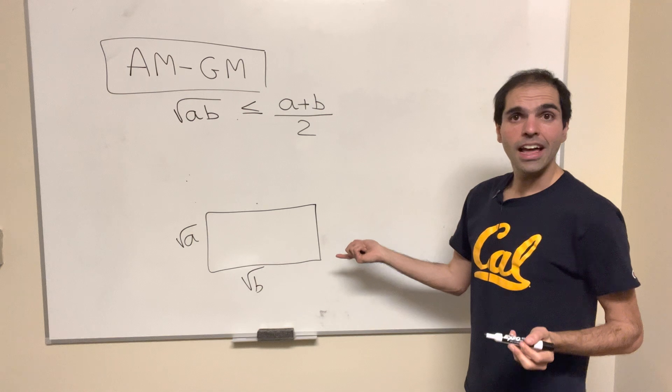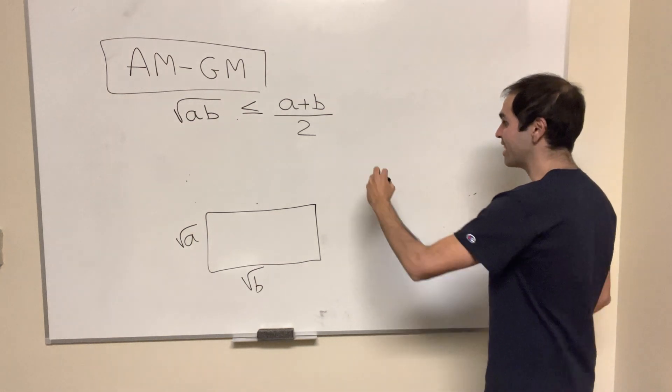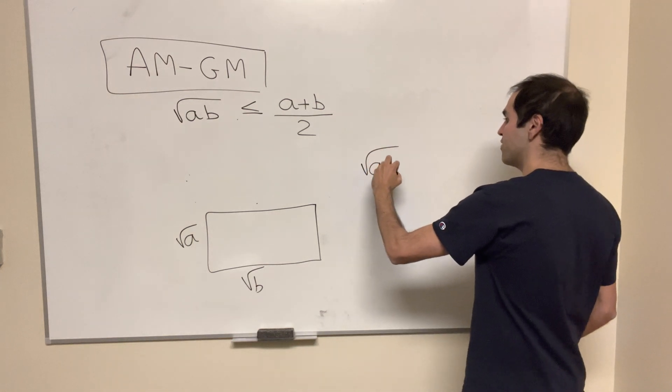Then on the one hand, the area of that rectangle is square root of a times b.